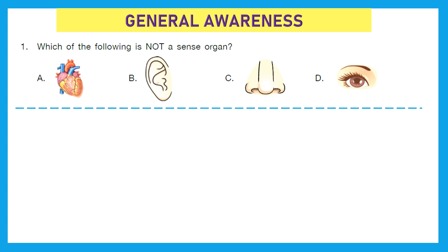Let's go ahead with our first section, that is general awareness. Question 1: Which of the following is not a sense organ? Do you know all the sense organs? Let's count: eyes, nose, ears, tongue and skin. So which one is not a sense organ? That is option A, heart.